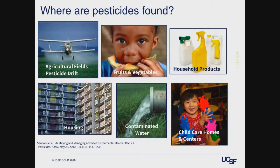Where are pesticides found? Really everywhere — they are very common in everyday life. In California and other states, we have a lot of pesticides in agriculture, with crop dusters spreading pesticides into the air. Fruits and vegetables that aren't organic have pesticides. Household cleaning products, buildings themselves, and products used in construction can contain pesticides, and they can seep through the ground like radon. Contaminated water is also a concern, as are child care settings, schools, and homes.